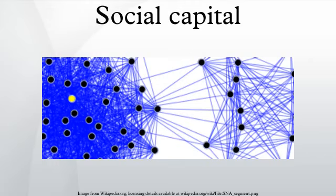James Coleman defined social capital functionally as a variety of entities with two elements in common: they all consist of some aspect of social structure, and they facilitate certain actions of actors within the structure. That is, social capital is anything that facilitates individual or collective action, generated by networks of relationships, reciprocity, trust, and social norms.